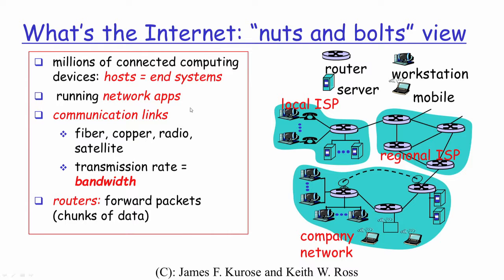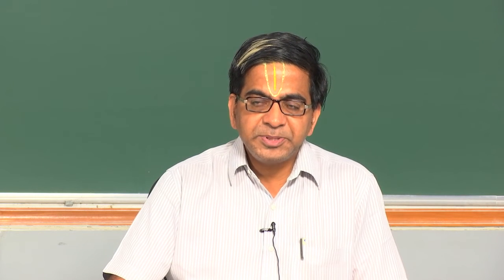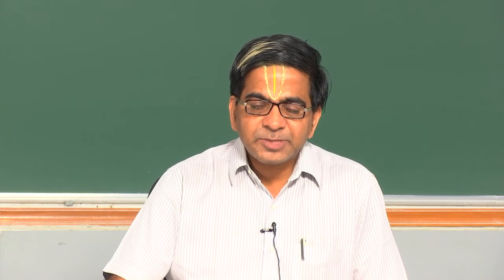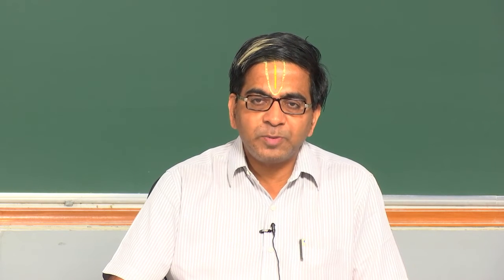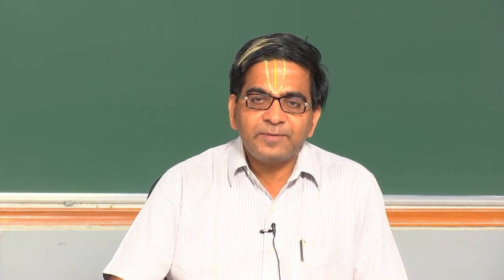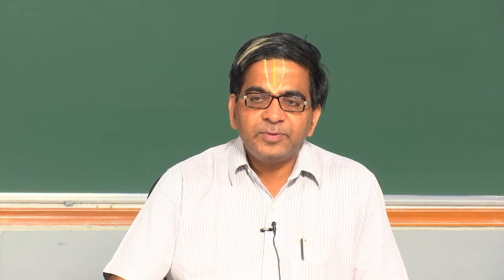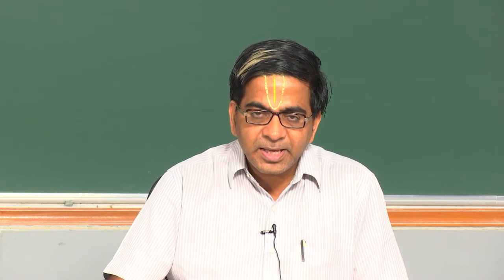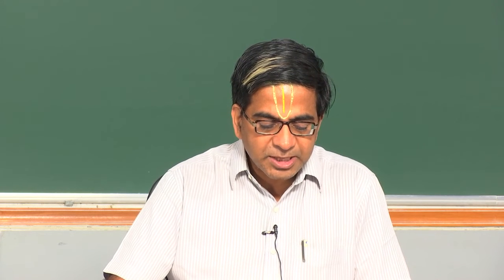How do we differentiate what kind of communication link is suited for a specific requirement? It depends on the transmission rate that your network application typically requires. The rate by which data needs to be transferred is basically referred to as bandwidth. For example, at home your provider might offer a 2 Mbps, 4 Mbps, or 16 Mbps line — megabits per second is what is referred to as the transmission rate or bandwidth.